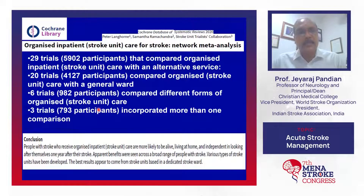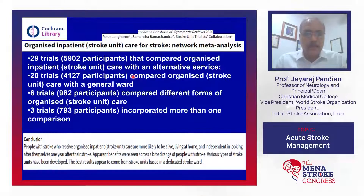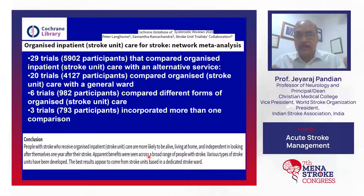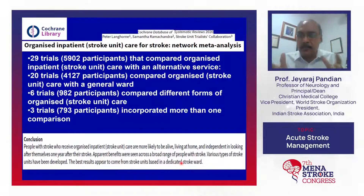The latest Cochrane review on organized inpatient stroke unit care, from more than 40 to close to 50 trials across different types of stroke units, shows that patients managed in a stroke unit are more likely to be alive, living at home, and independent at one year after stroke — irrespective of stroke subtype. This benefit is most significant in stroke units based in a dedicated stroke ward.